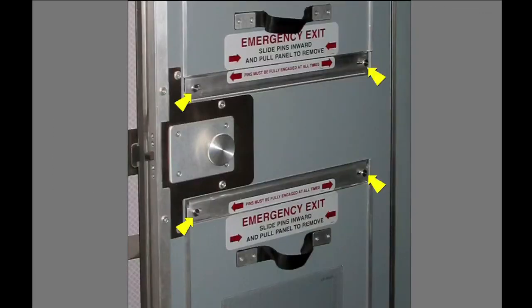The decompression panels are also emergency exit panels. The flight crew slides the pins inward and pulls the panels out of the door. This provides an emergency exit if the security door becomes blocked or jammed.